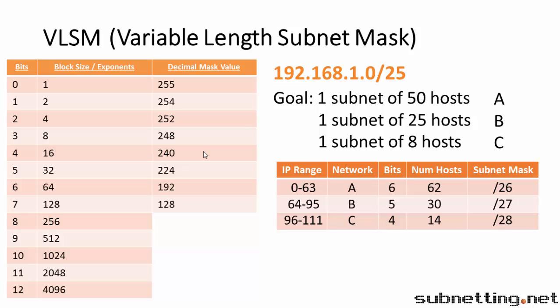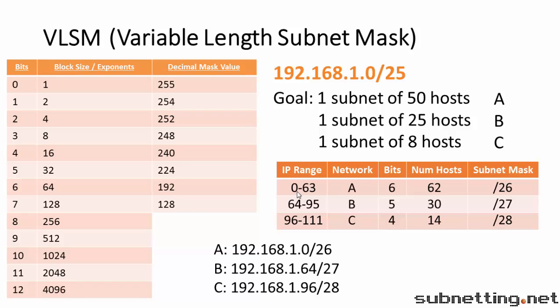Now we can write our final answer by joining the network IDs with the subnet masks. So you can see we start at 0 for the first one, and we have slash 26. Our second network begins at 64, and it's a slash 27. And our final network is 96, and it's a slash 28. This is the answer. We now have separated the network into multiple subnets of different sizes, which is also called a variable length subnet mask.